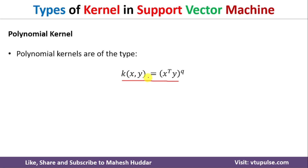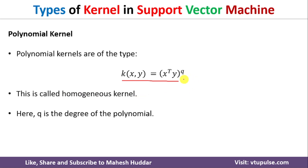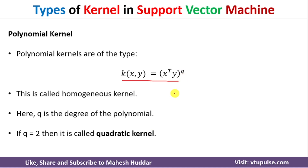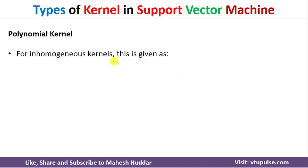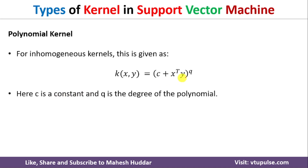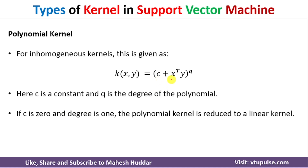The second type of kernel is the polynomial kernel, defined as k(x,y) = (x transpose y) raised to q, where q is the degree of the polynomial. This is also called the homogeneous kernel. If q equals 2, it is called the quadratic kernel. If we add a constant c, it becomes the inhomogeneous kernel: k(x,y) = (c + x transpose y) raised to q. If c equals 0, it reduces to the homogeneous kernel, and if c equals 0 and q equals 1, it becomes the linear kernel.